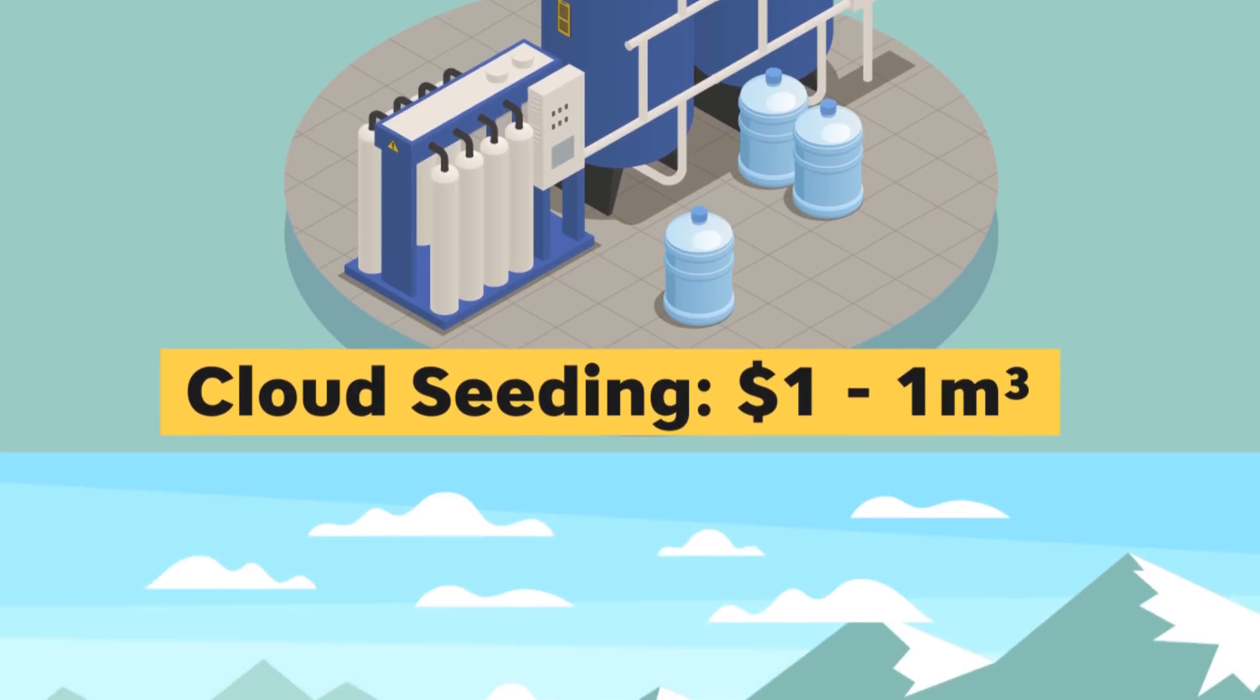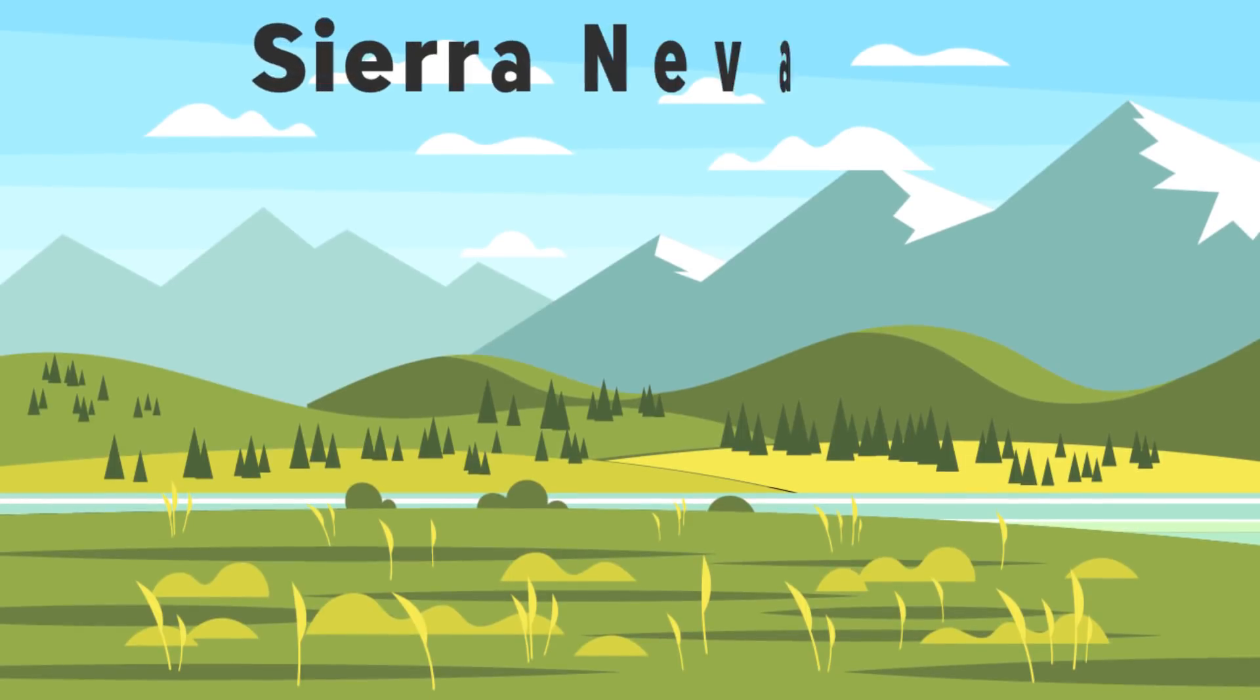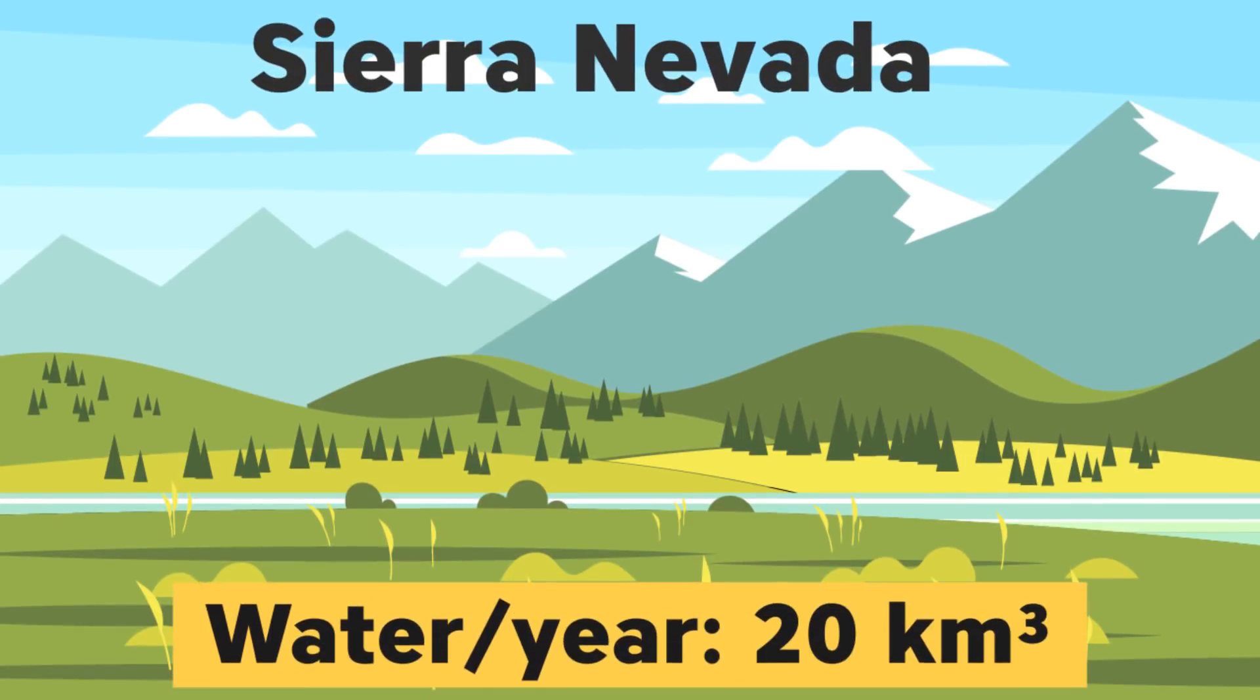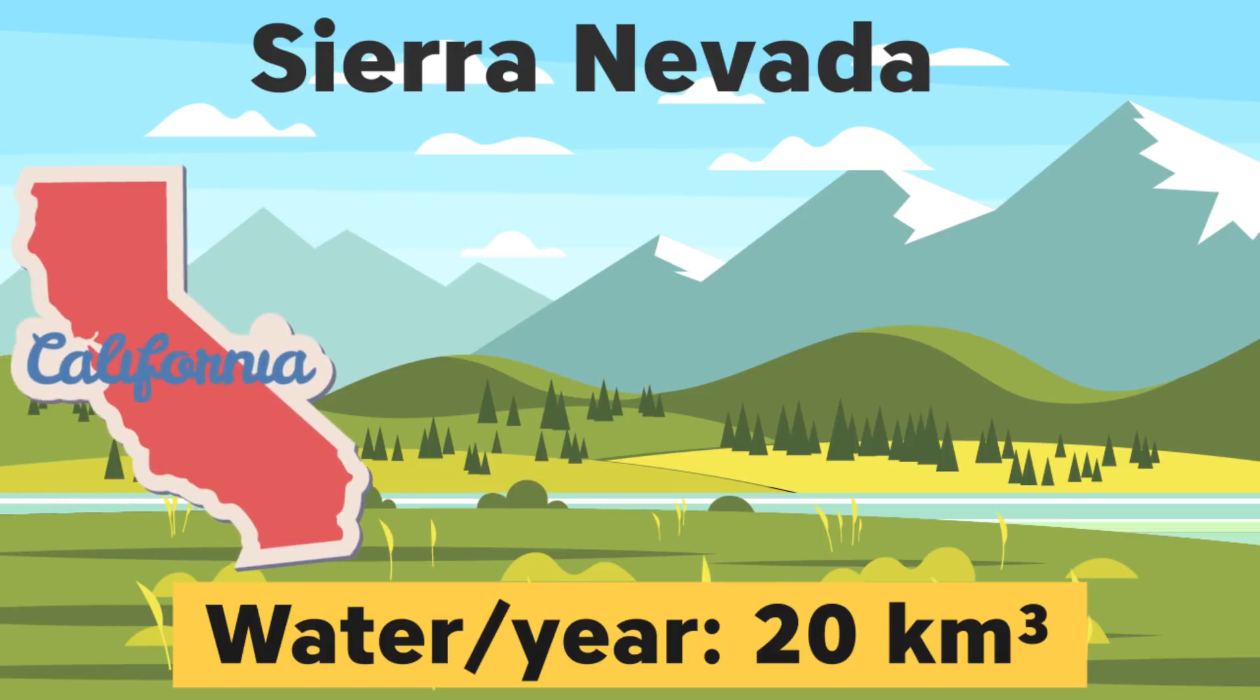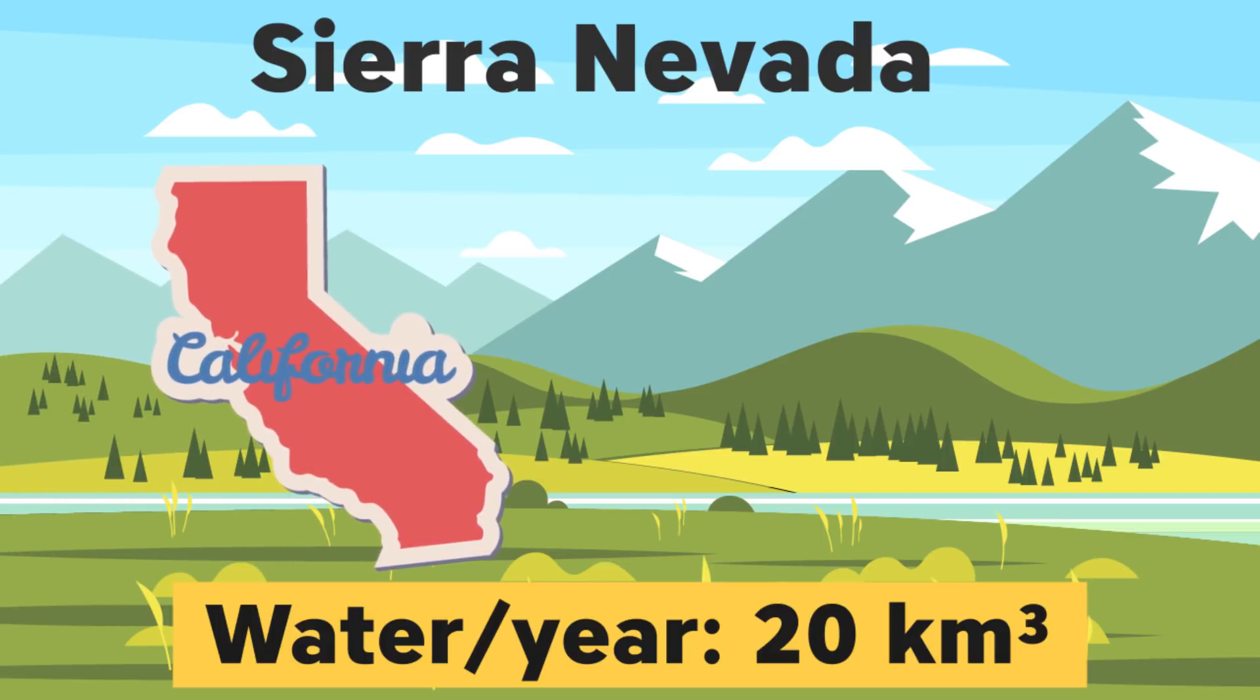Building a mountain can solve the water problems of the UAE, specifically Dubai, in the long term. For example, the Sierra Nevada mountains average 20 cubic meters of water, and this supplies more than 60% of California's water to 25 million people and 3 million acres of farmland.